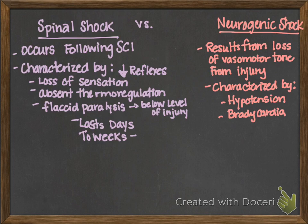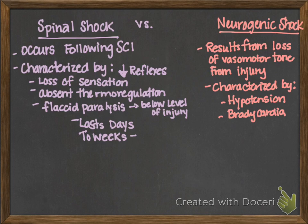Keep that in mind when you're doing practice tests. You may see a question asking you the difference between these two, and it's not going to be cut and dry. Most of the time — not all the time — if it's neurogenic shock they're going to give you the characterization of hypotension and bradycardia. They'll say something like the blood pressure is 78 over 40 and the heart rate is 42 — that will give you a key idea.